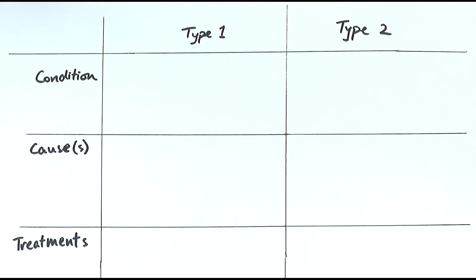Here we'll look at three specific things: the difference between type 1 and type 2 diabetes, their conditions and causes, and the potential treatments. In another video, I'll be talking more about the different types of treatments and their progression, as exam questions often ask you to link these topics to other things you've learned.